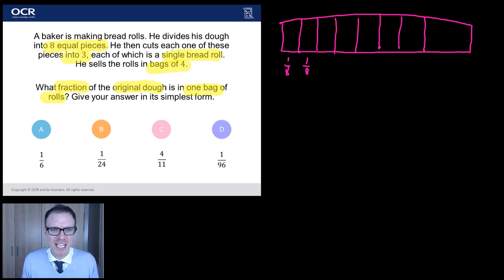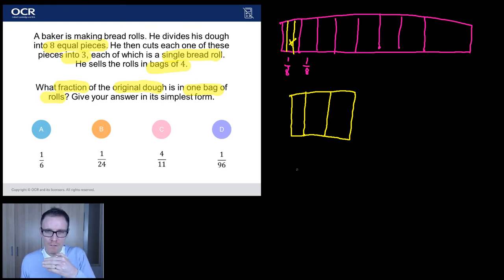He then cuts each one of these pieces into three. So let me take one of these pieces. Let's say this one, for example, and let's put it here. And I'll just make it a little bit bigger for the purposes of the illustration. I'm going to divide that little one into three. So if we just zoom in there, it's like I've taken that and I've divided it up into three. Now, what fraction of the original dough is one of these pieces? Well, you can kind of see, because now each of these eighths is divided into three.